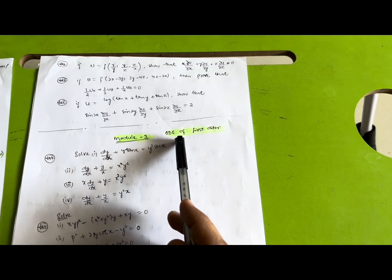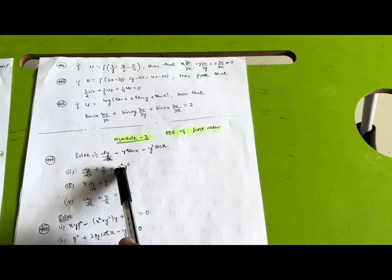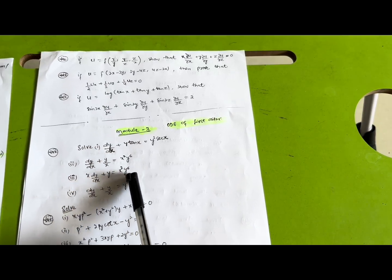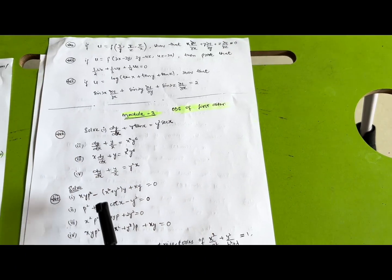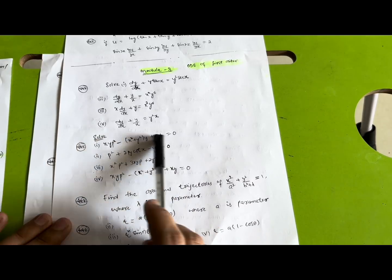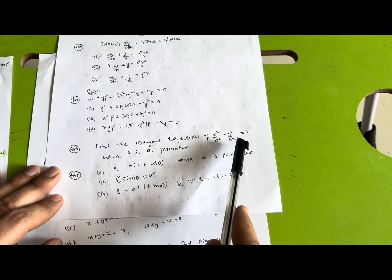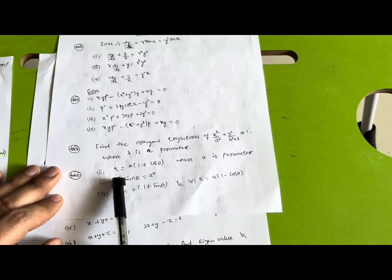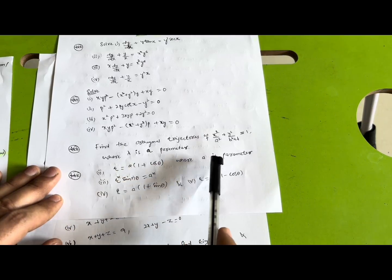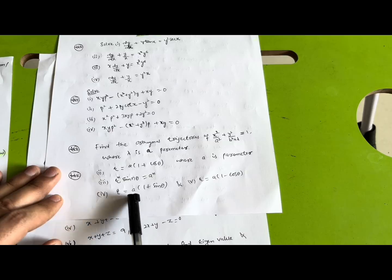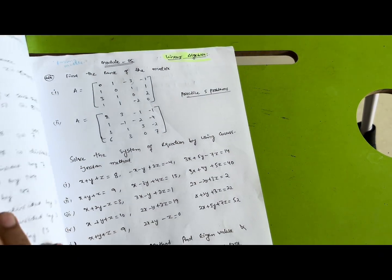Now Module 3 — super important questions from ordinary differential equations of first order. Solve: dy/dx + y·tanx = y³·secx; dy/dx + y/x = x²·y⁶; x·dy/dx + y = x³·y⁶; dy/dx + y/x = y²·x. These equations are frequently asked in video examinations. Also important: find the orthogonal trajectories of x²/a² + y²/(b² + λ) = 1 where λ is a parameter; r = a(1 + cosθ) where a is the parameter; rⁿ·sin(nθ) = aⁿ; r = a(1 + sinθ) and r = a(1 − cosθ).